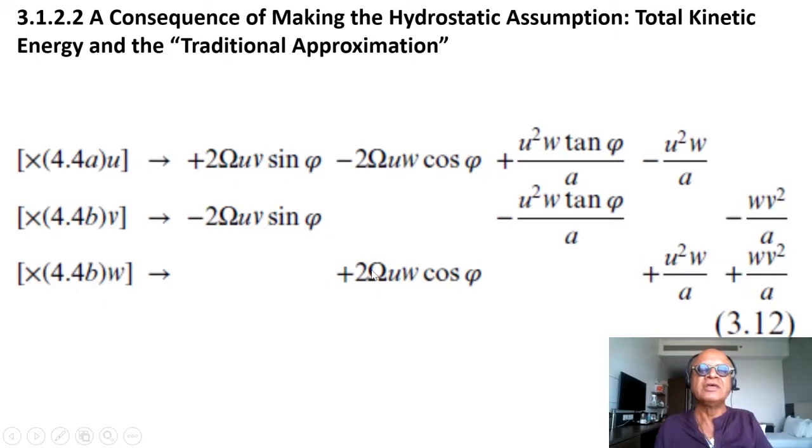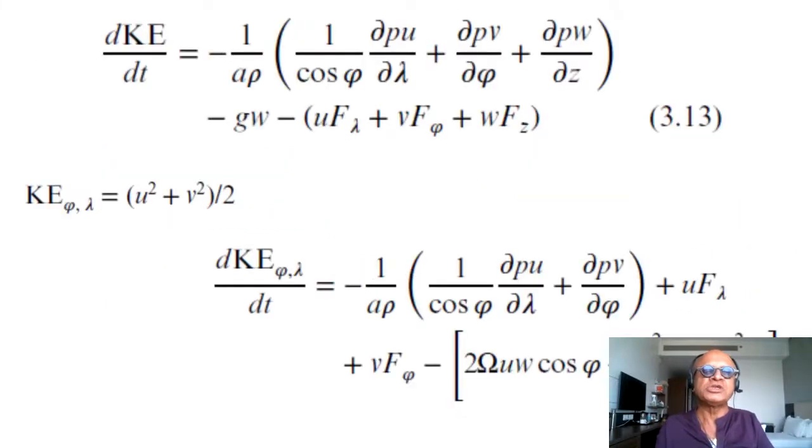If you look at the time rate of change of the kinetic energy from that equation, you will get -1/(ρa) 1/(cos φ) ∂p/∂λ u where λ is the longitudinal direction, ∂p/∂φ v (latitudinal), basically work done by the pressure force, ∂p/∂z w, and gravitational work plus the dissipation.